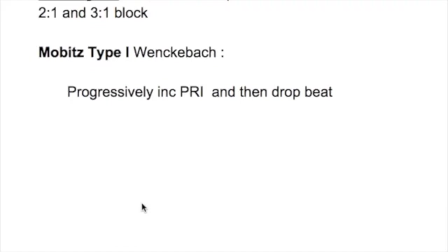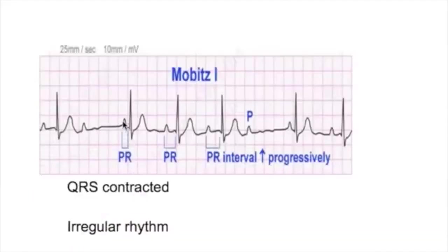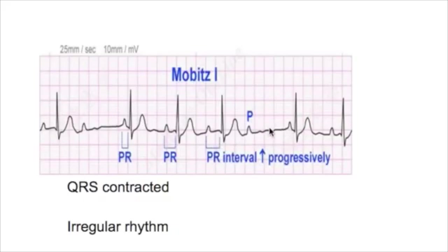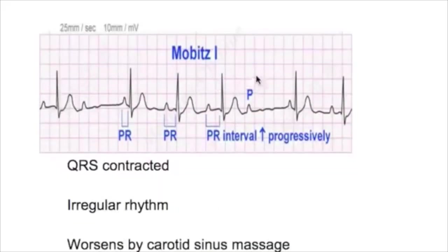In Mobitz type one, there is a progressively increasing PR interval — you can see the PR interval increasing — and then there is a QRS drop. One P wave is present but the QRS is missing.